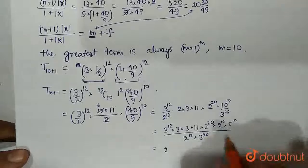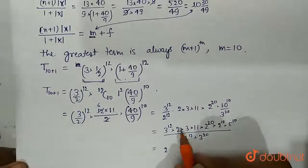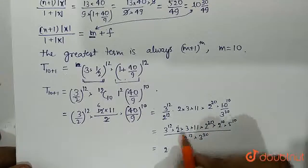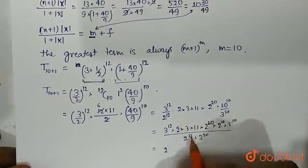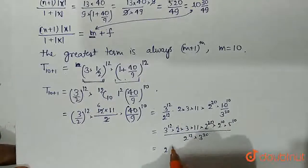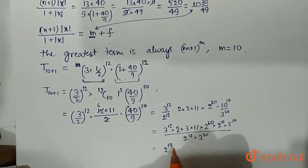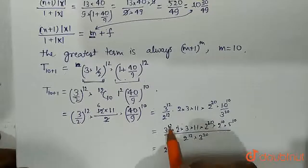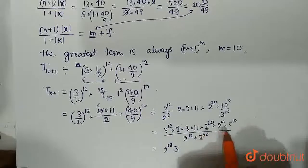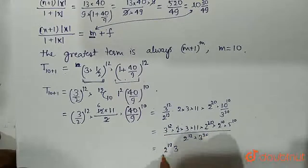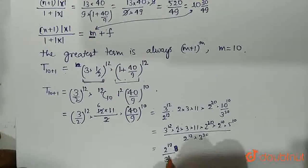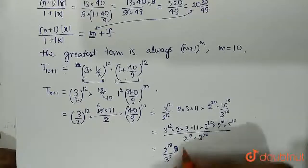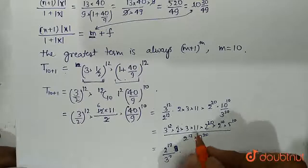So this equals to 2 raised to the power 1 plus 20 plus 10, 31 minus 12, so 31 minus 12 is 19, 2 raised to the power 19. Sorry, 3 raised to the power 12, 13. So this goes down 3 raised to the power 7 because 20 minus 12 is 8 and 8 minus 1 is 7.